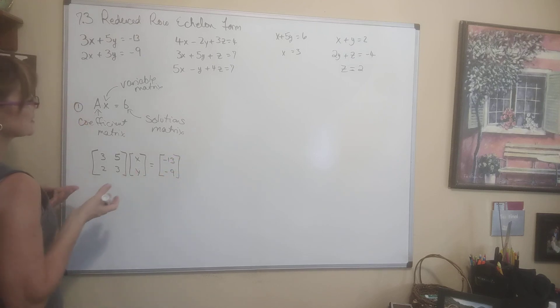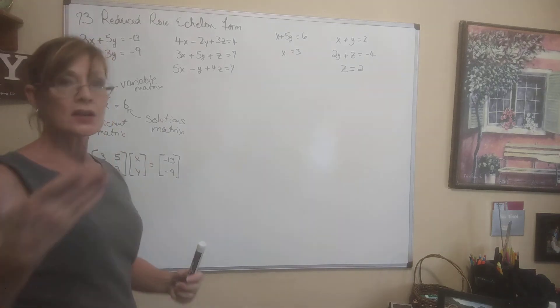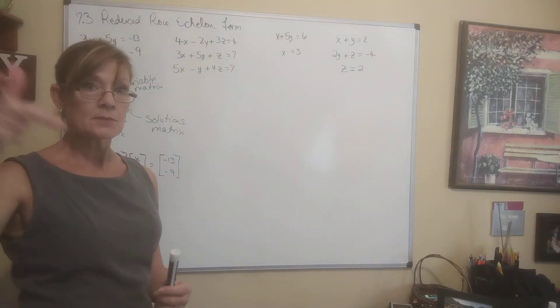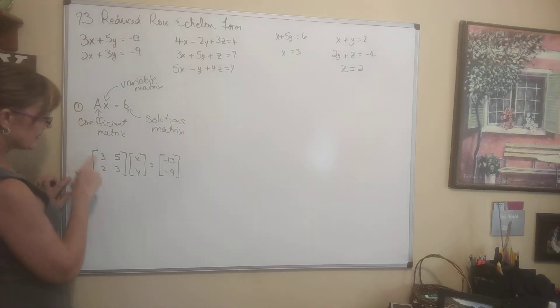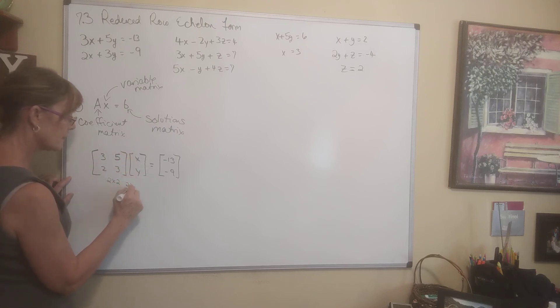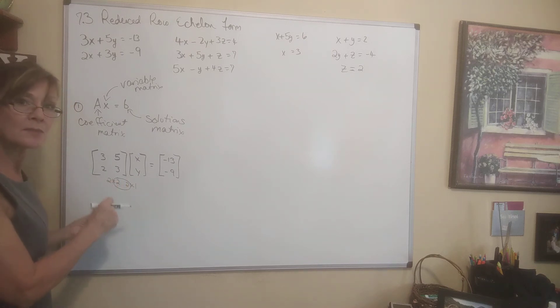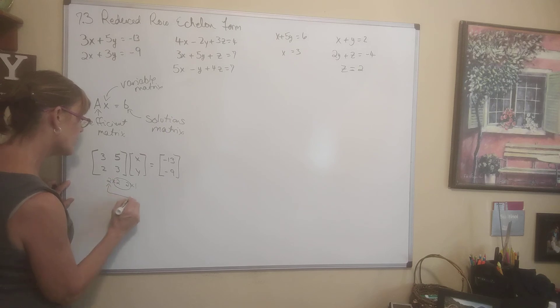This is the matrix equation for this. We just talked about multiplying matrices. So let's make this make some sense in our head. What size is this? The coefficient matrix, it's 2 by 2. What size is the variable matrix? It is 2 by 1. Are we allowed to multiply them? Yes, because the inner dimensions match. What will the resulting matrix be? It will be a 2 by 1, which it is, a 2 by 1. This should make some sense.